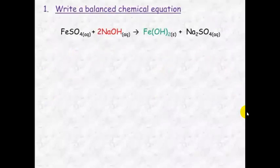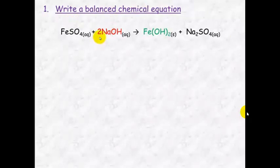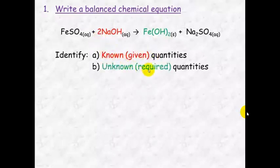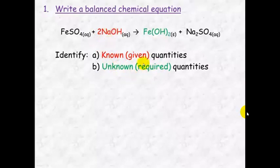So the first step with stoichiometry is to write your balanced equation so that you can find these mole ratios. Using the information given, you identify the species that you know information about and the species that you're trying to find information about. The species that you know is called the known, and the other one that you're trying to find out is the unknown.